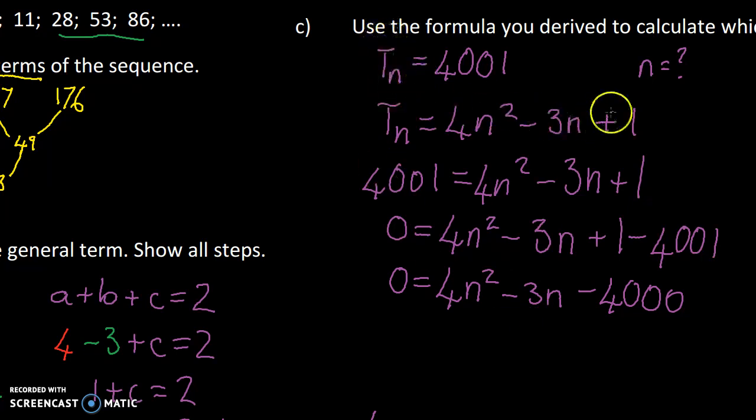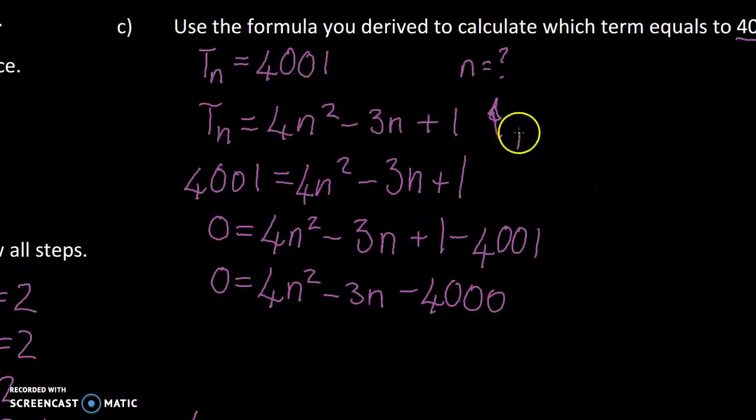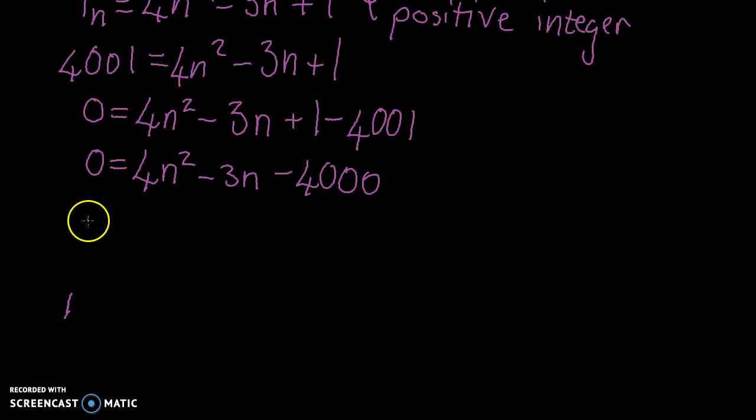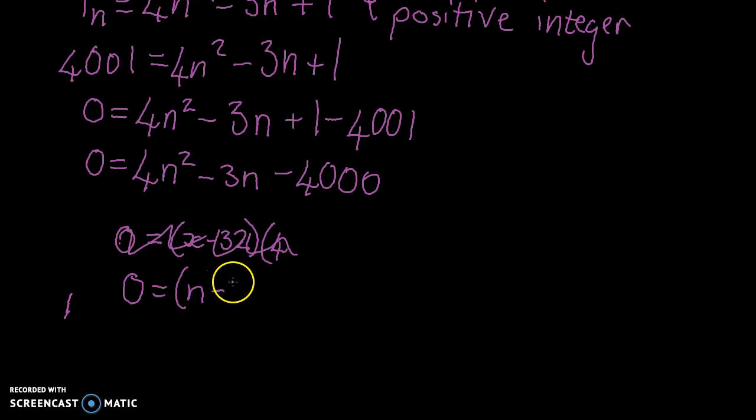What you have to be careful with, with a question like this, is that n will always have a positive value and it will be an integer. So it's a positive integer. That means we can't get 3 and a half as an answer. And I was playing with this a little earlier on, so I figured out how to factorize it. And I encourage you to go do it in your own time as well. But it basically factorizes to n minus 32 and 4n plus 125.